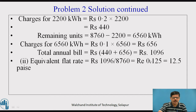The equivalent flat rate, if we want to calculate, will be equal to total annual bill divided by total number of units — so 1096 divided by 8760 — which comes out to be Rs. 0.125, that is 12.5 paise per unit.